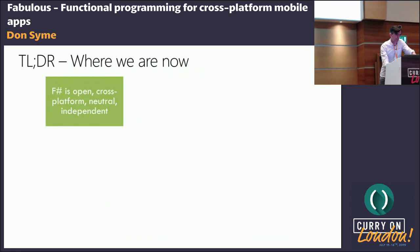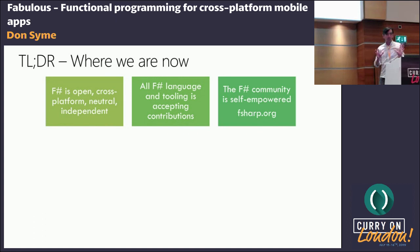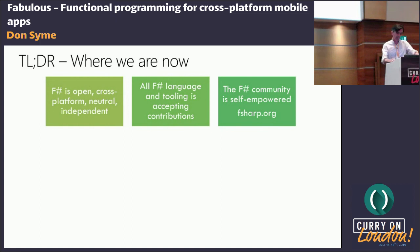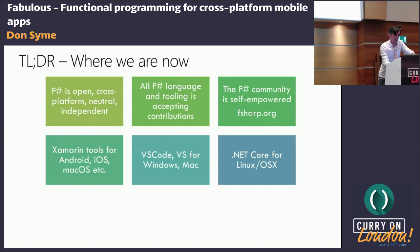F-Sharp is open, cross-platform, neutral, and independent as a language. All the language and tooling accepts contributions, and the F-Sharp community is a very self-empowered organisation. There's the F-Sharp Software Foundation, set up similar to the Python Software Foundation, with its own board elected by the community each year and its own funding. F-Sharp tools for Android, iOS, and macOS are provided through Xamarin. We have VS Code, Visual Studio for Windows and Mac, .NET Core for Linux and OSX, and JetBrains provides support in Rider as well.